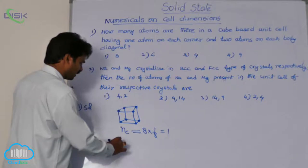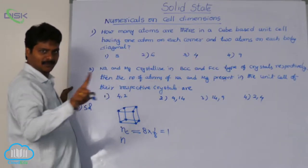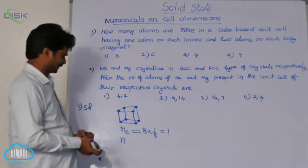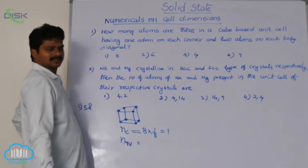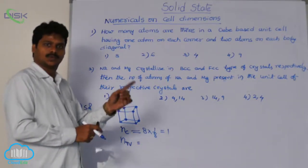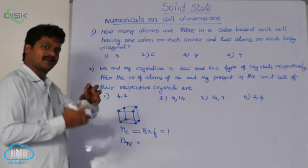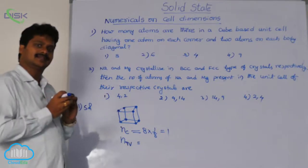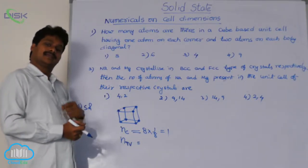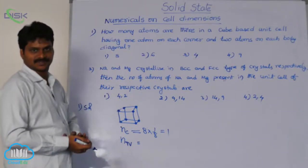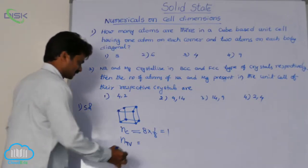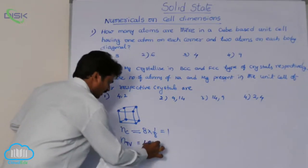Next, number of atoms from body diagonal: along the body diagonal, atoms are all complete atoms — body diagonal atoms are in tetrahedral voids. How many body diagonals do we have? Yes, 4 body diagonals. A body diagonal passes through 2 opposite corners. When you take one corner and its opposite corner and draw a line through the body center, that is the body diagonal. Any atom present along the body diagonal is a complete atom. From 4 body diagonals, each containing 2 atoms: 4 × 2 = 8.